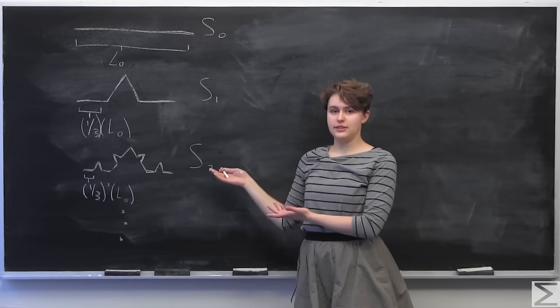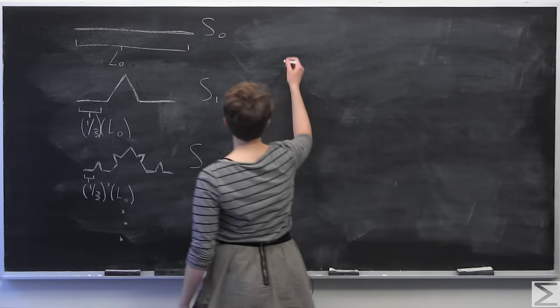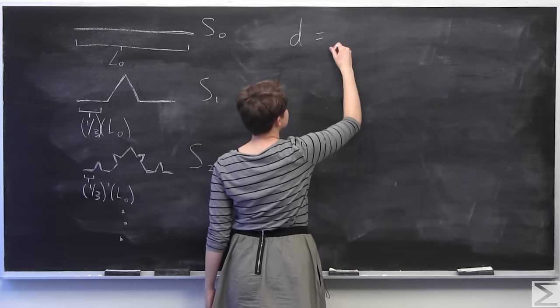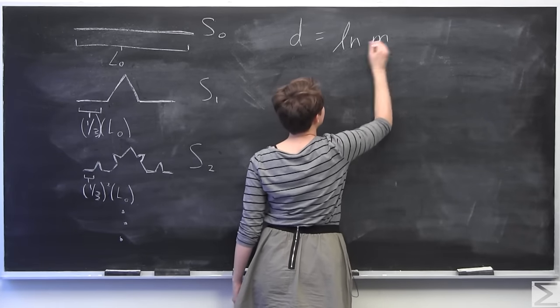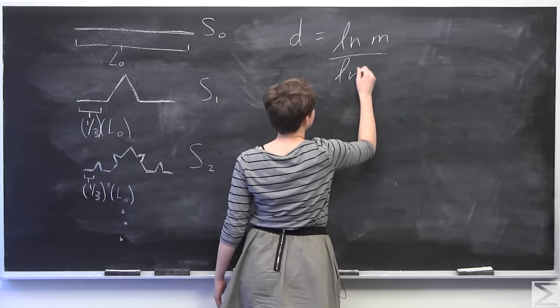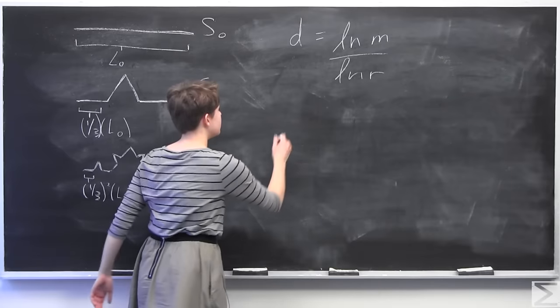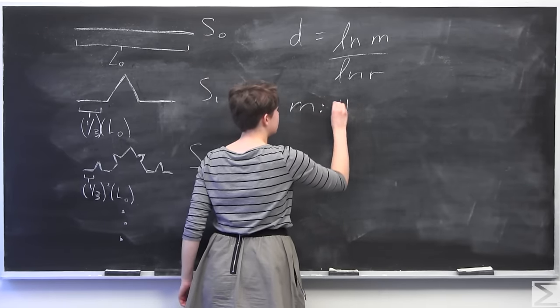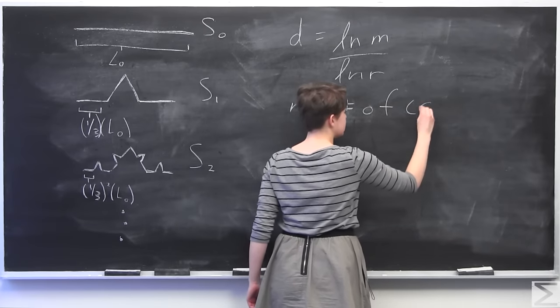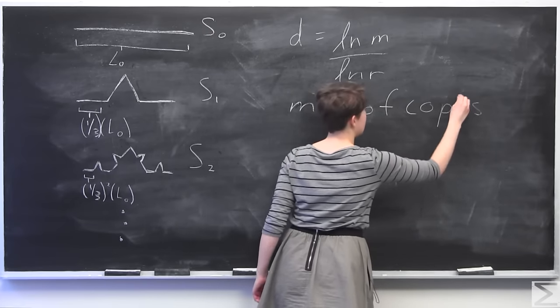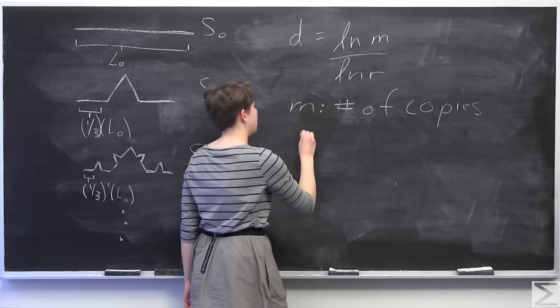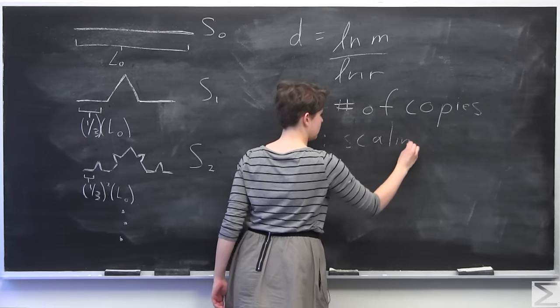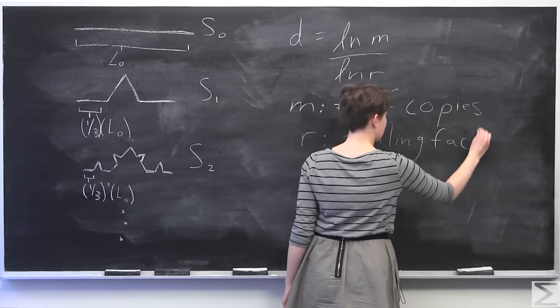So I'll give you the formula of the similarity dimension and then we'll calculate it. The formula of the similarity dimension is as follows. d, which stands for dimension, is equal to ln m over ln r, where m is equal to the number of copies in each successive iteration. And these copies will be scaled down. And we account for that scaling by r, which is the scaling factor.